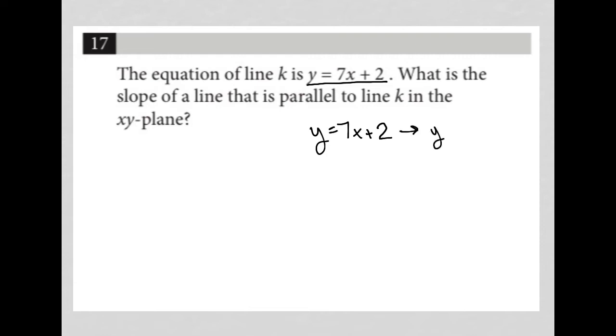this is similar to y equals mx plus b, which tells me that the 7, right, matches with the m. So the 7 is the slope here. So my slope to line K is equal to 7.